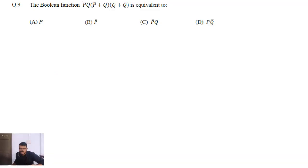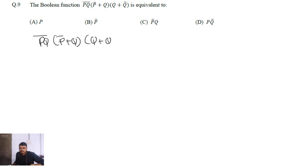The question is: the boolean function (pq)̄ · (p̄ + q) · (q + q̄) is equivalent to what? In this question, first we have to consider this term (pq)̄ · (p̄ + q) · (q + q̄).